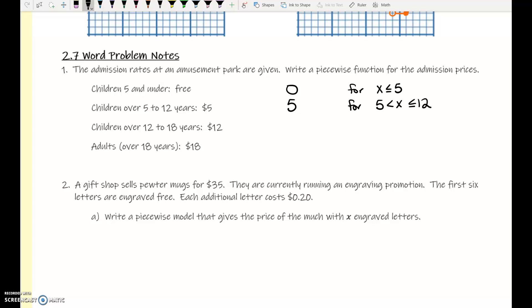Children 12 to 18 years old are $12. And it's going to follow that same pattern: 12 less than x less than or equal to 18. And then $18 for people who are over 18, so greater than 18. You put this fancy little bracket thing on it and say f of x equals, and you've written a piecewise function.